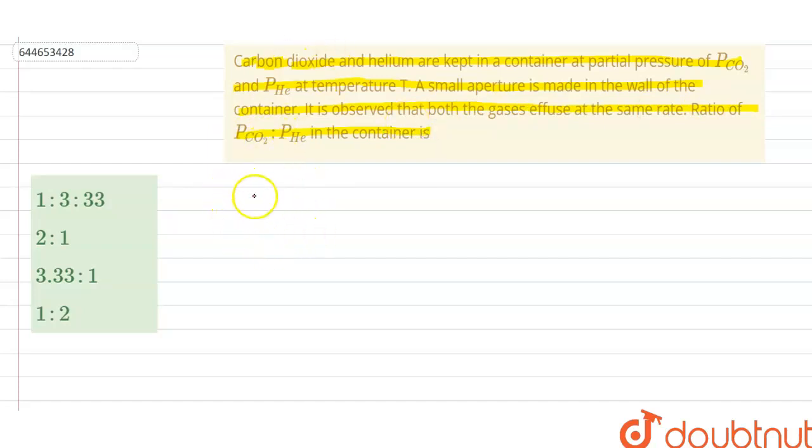We have to find the ratio of their pressures respectively in the container. In order to solve this question, first we need to know the relation between the rate with the pressure as well as the molar mass of the gases. The rate is directly proportional to the pressure of the gas, and the rate of effusion is inversely proportional to the square root of the molar mass.